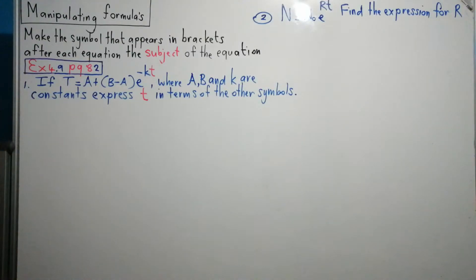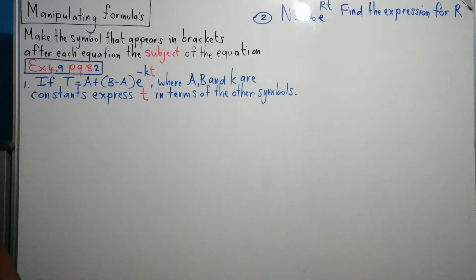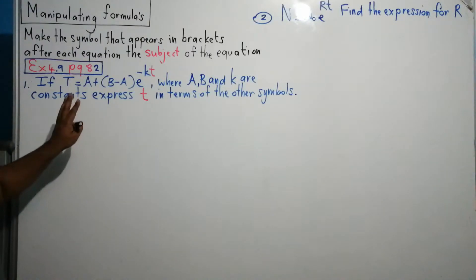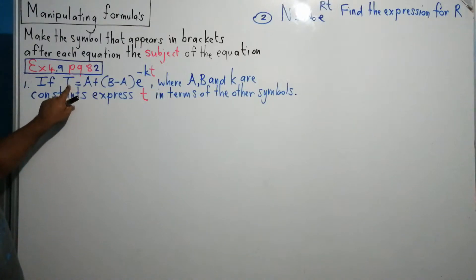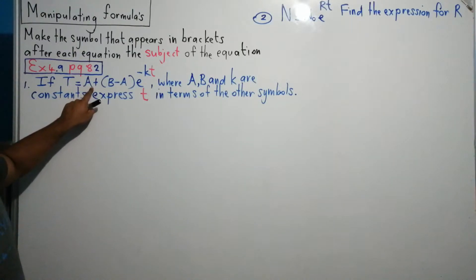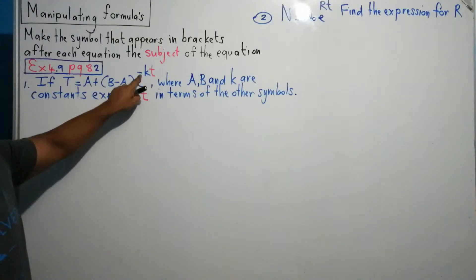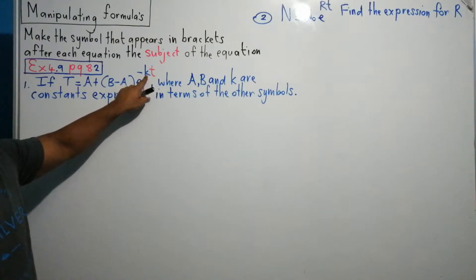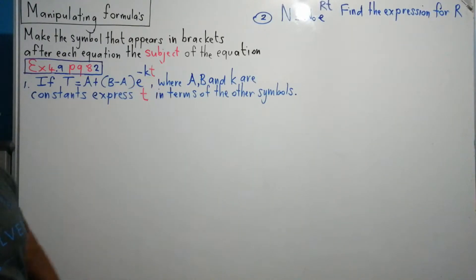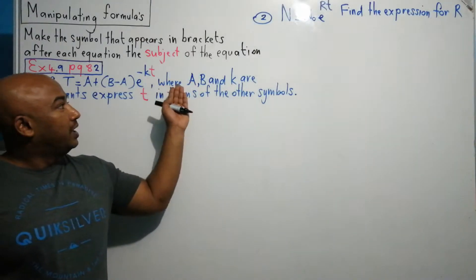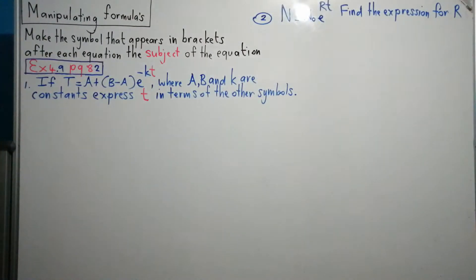The next question comes from exercise 4.9: manipulating formulas. Let's have a look at this equation. T is equal to A plus B minus A times E to the power minus K times T. We are told that A, B, and K are constants. Express T in terms of the other symbols.